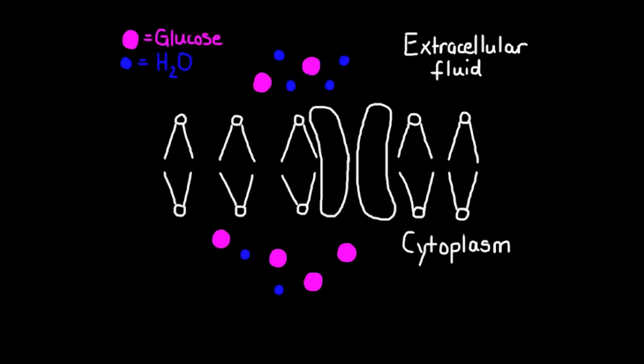Simple diffusion of water is known as osmosis, and the definition of this is water moving from an area of low solute concentration to an area of high solute concentration across the semi-permeable membrane. In this example, we can see the water moving from the extracellular fluid, where there is a relatively low glucose concentration, to the cytoplasm where there is a relatively higher glucose concentration.